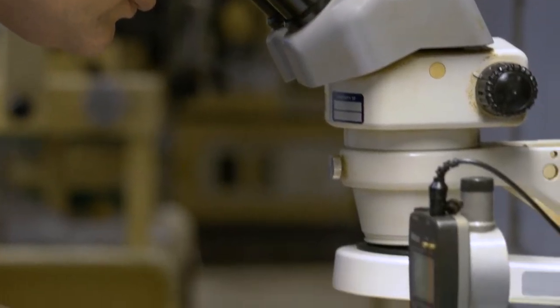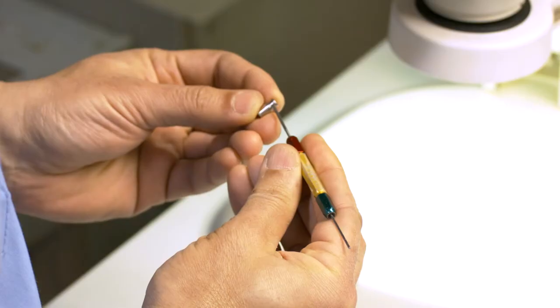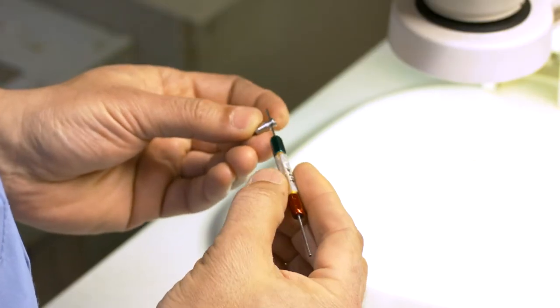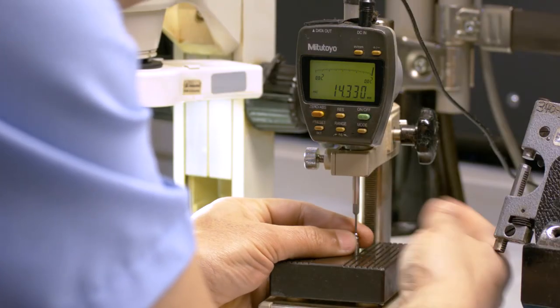It all starts in the temperature and humidity controlled engineering lab, where the parts are inspected to make sure they're within the specified tolerance range. For example, this digital micrometer validates overall product height.